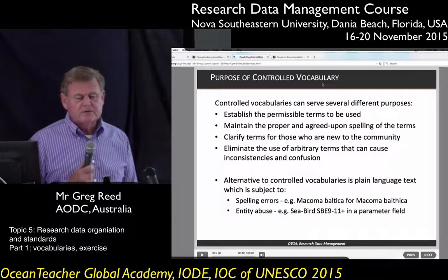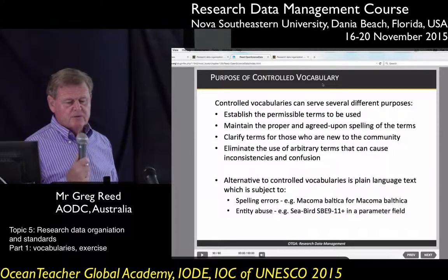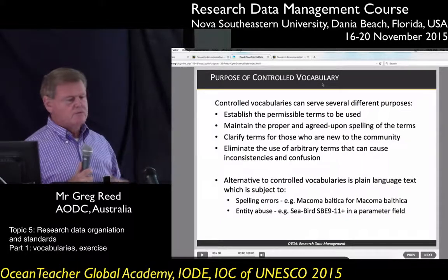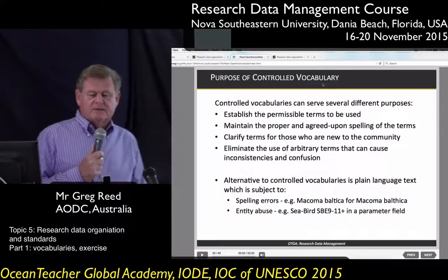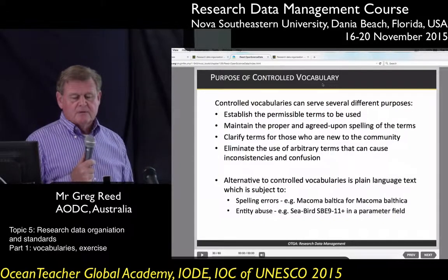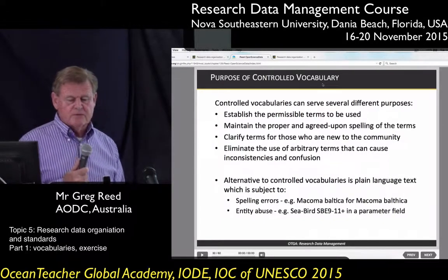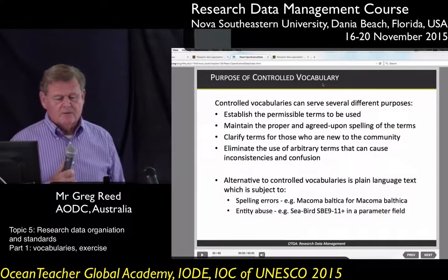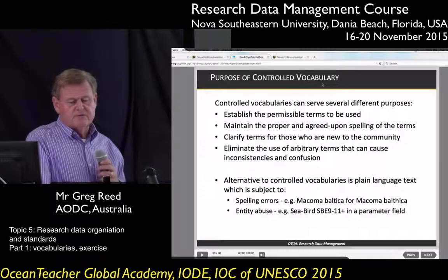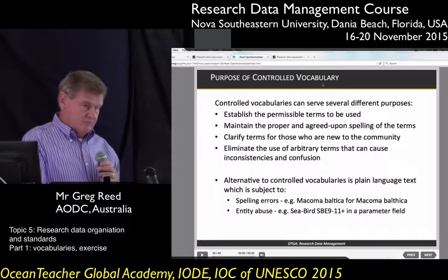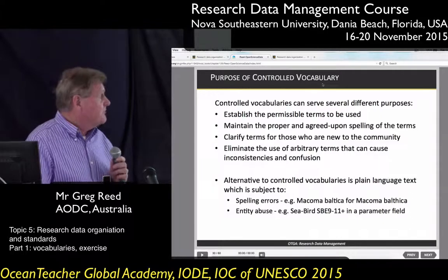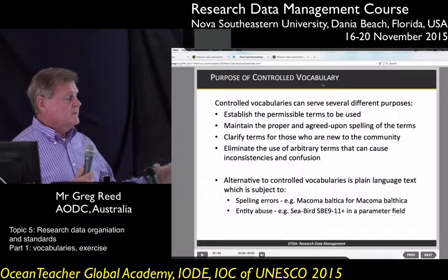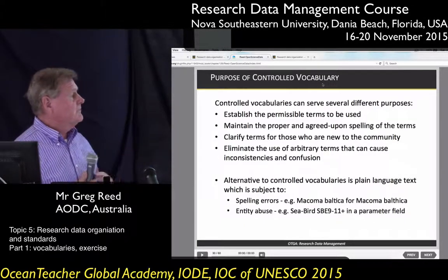Why do we have controlled vocabularies? They serve several purposes. First, they establish the permissible terms to be used — that is, the list of terms you must use to describe your data. They maintain proper and agreed-upon spelling of terms, clarify terms for those new to the community, and eliminate the use of arbitrary terms that can cause inconsistency and confusion. Without controlled vocabularies, words can be misspelled, and if spellings differ, searches won't return consistent results.